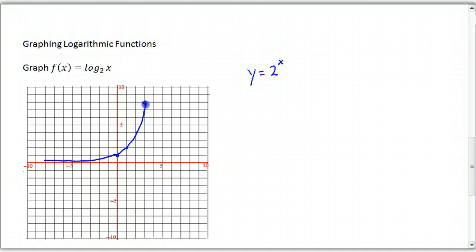So, this is Y equals 2 to the X. And we've got a horizontal asymptote along the X axis, right? Okay, so the way we can graph inverses is to reflect them over the line Y equals X.